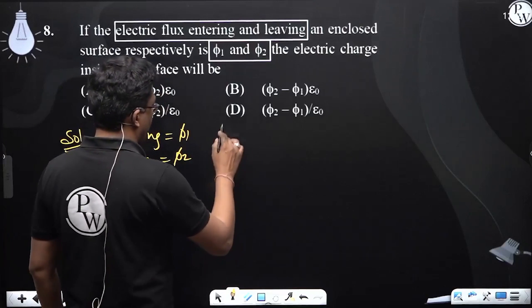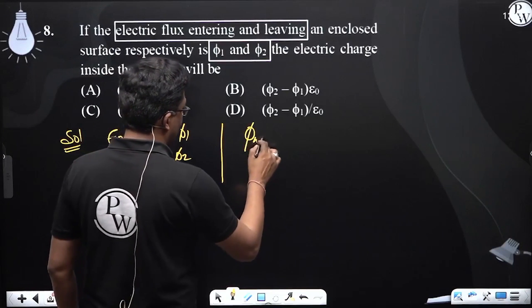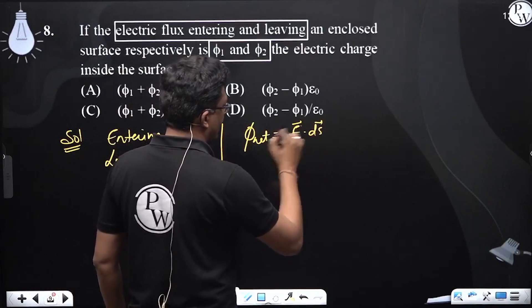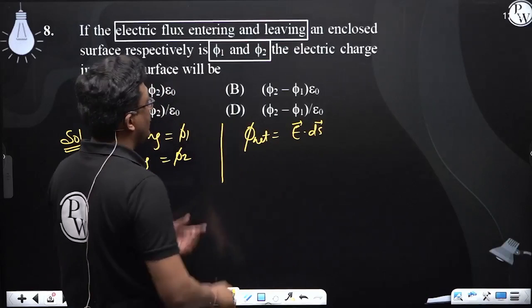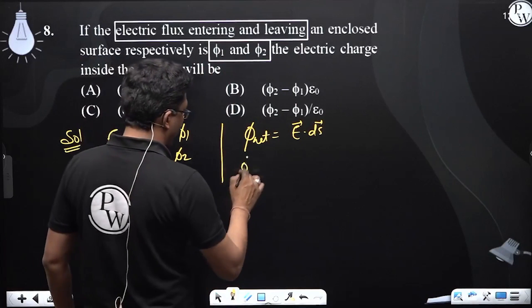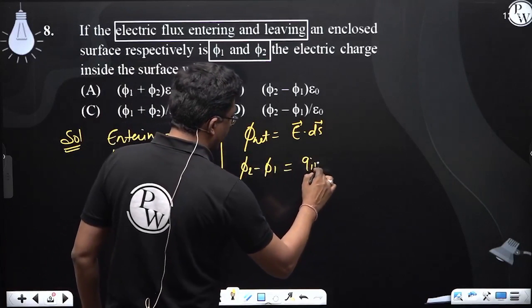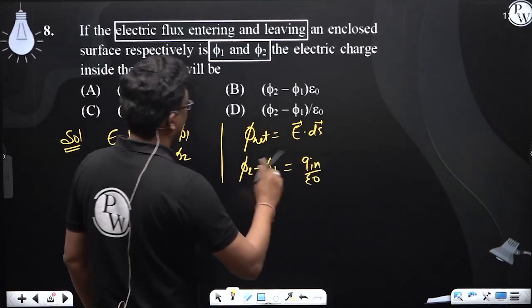Here we have flux net that is given by E.ds integral. Now, here we have net flux 5.2 minus 5.1, and this is q_in by epsilon_0.